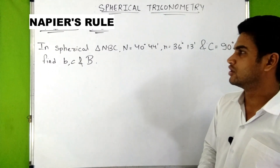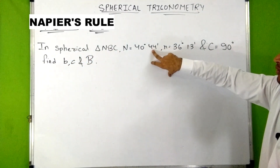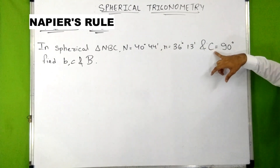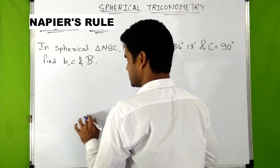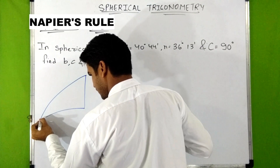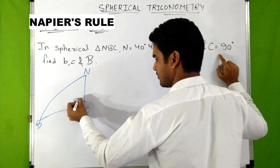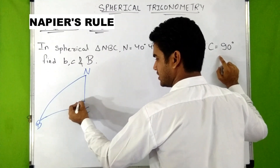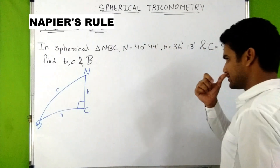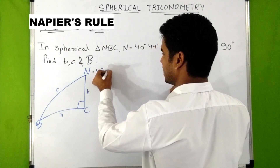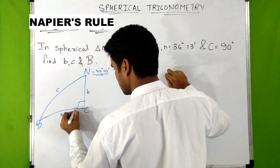In spherical triangle NBC, capital N = 40°44′, small n = 36°13′, and capital C = 90°. We have to find small b, small c, and capital B. First we draw the right-angled spherical triangle NBC right-angled at angle C, with sides small n, small b, and small c. The angle N = 40°44′ and side small n = 36°13′ are given.